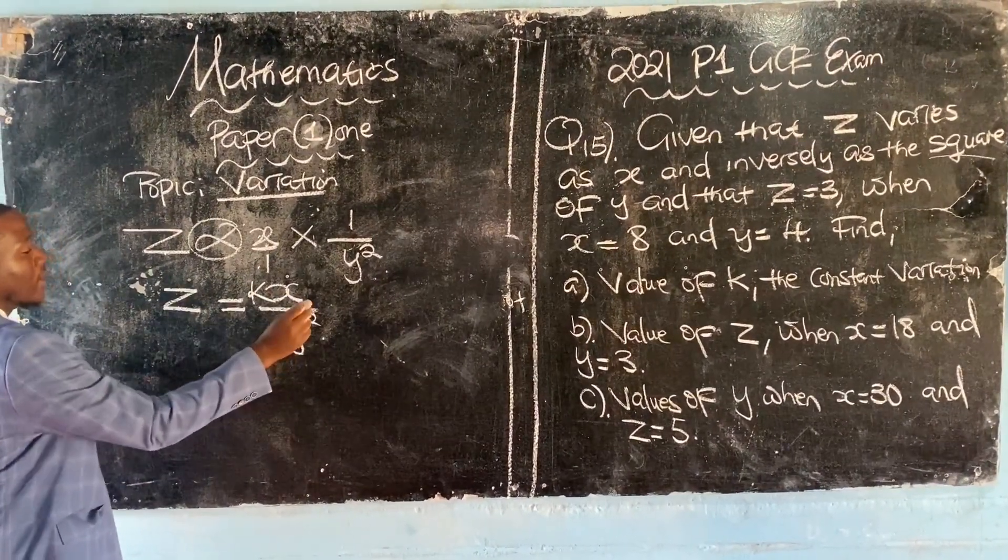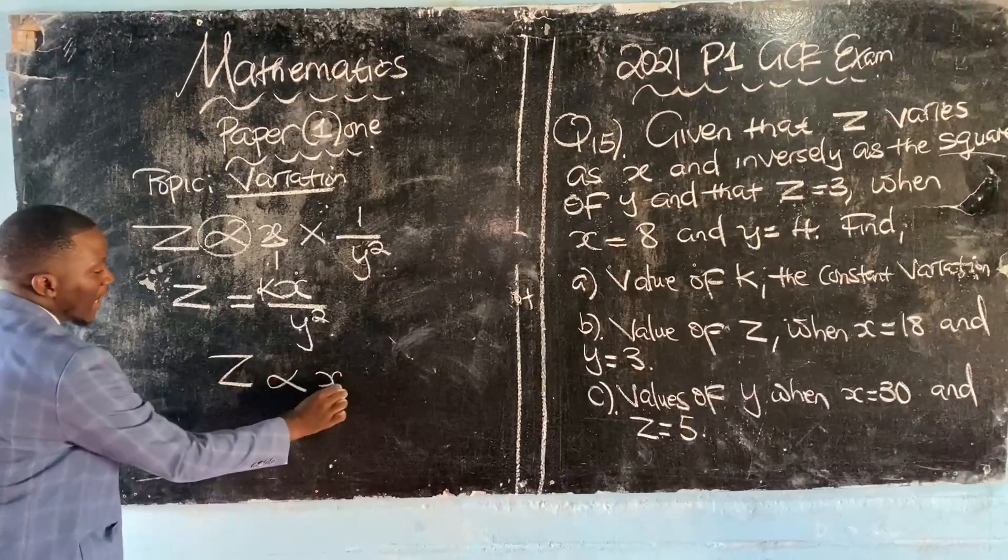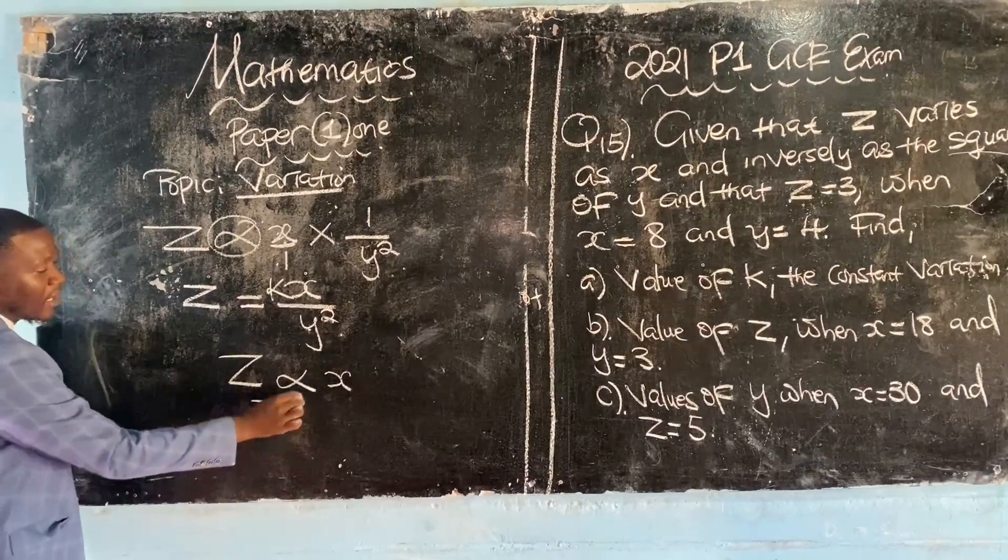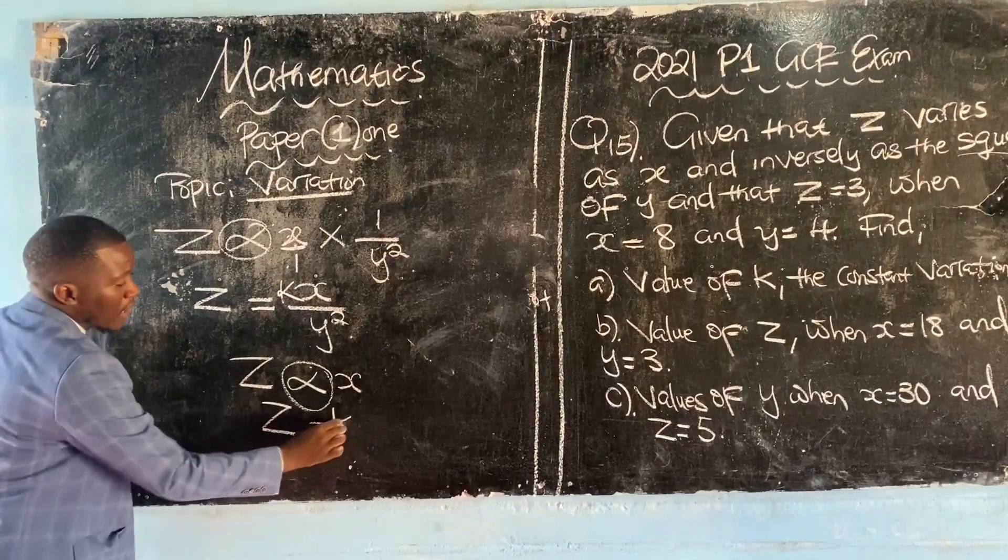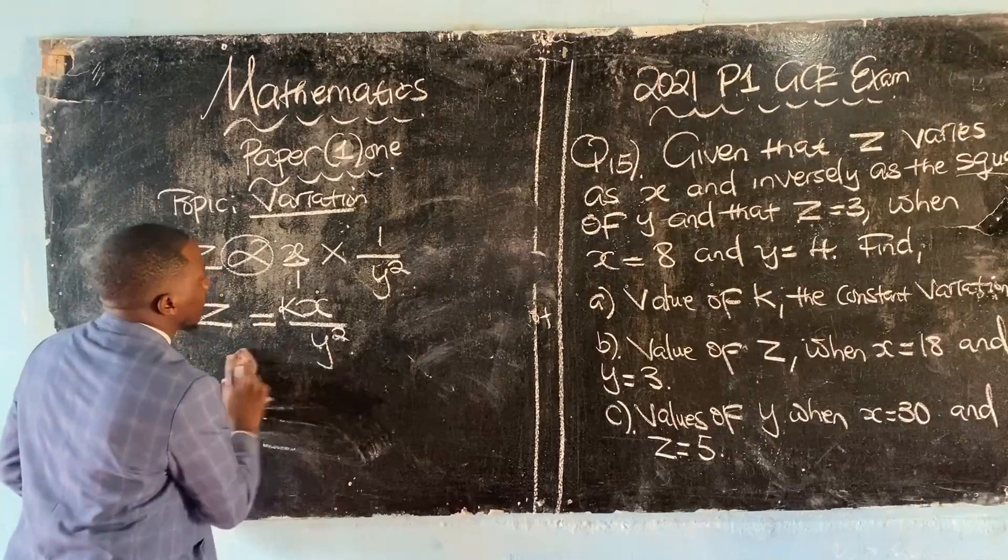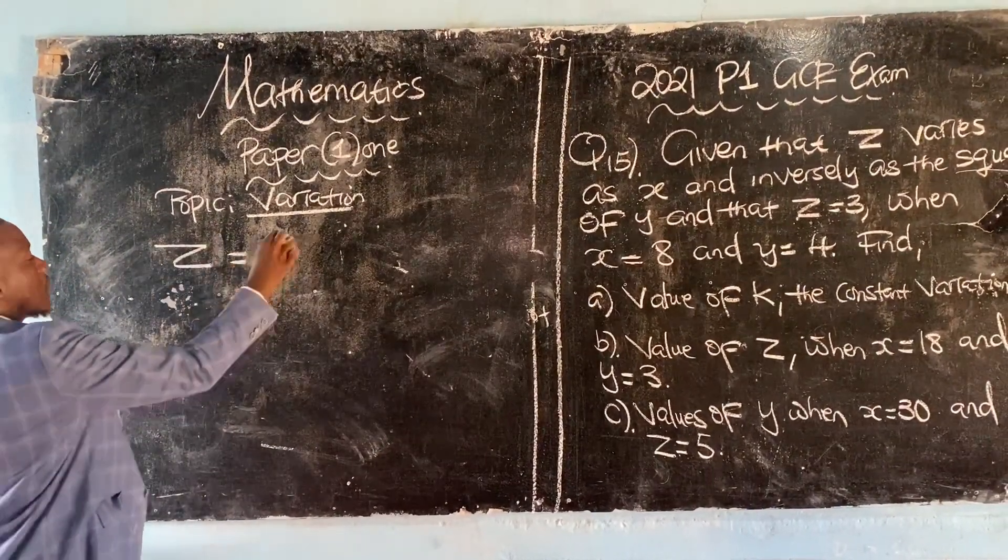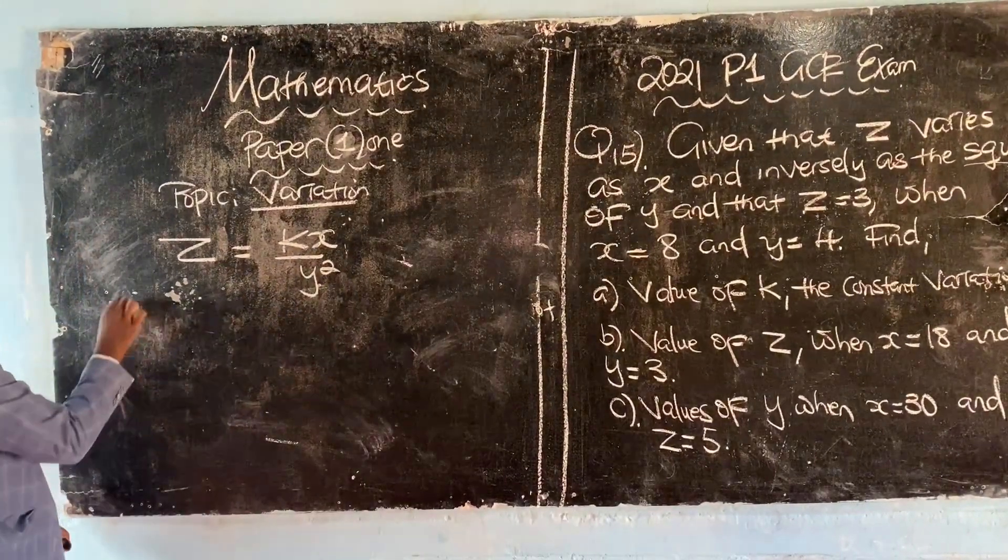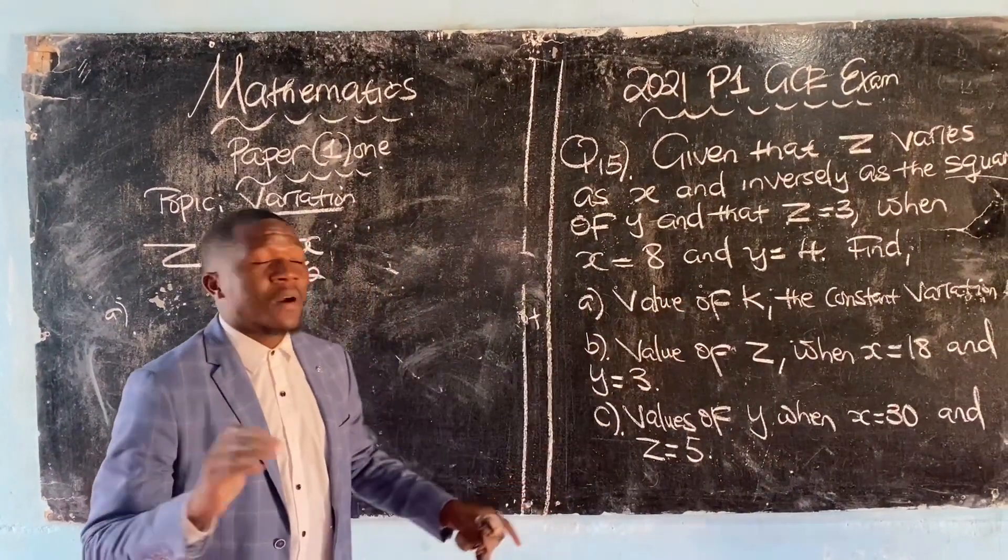If there was a question saying find the equation connecting z, x, and y, it would be z equals kx over y squared. Our equation is z equals kx over y squared, and they're trying to say find the value of k, the constant of variation.